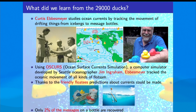What did we learn from these 29,000 rubber ducks? There is some science here. There was a guy called Curtis Ebbesmeyer who had been always passionate about the ocean, even though he was not a scientist. He was studying ocean currents by tracking the movement of flotsam, using a simulator called OSCURS, developed by oceanographer Jim Ingraham, and together they tracked all kinds of flotsam.